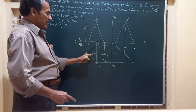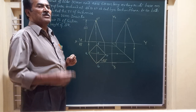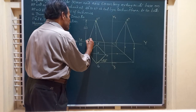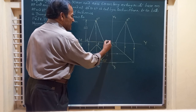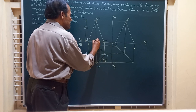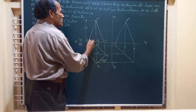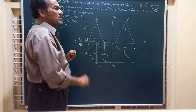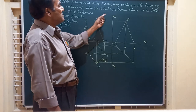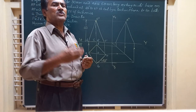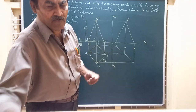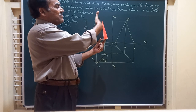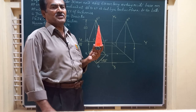In the top view, OA, OB, OC, and OD represent four slant edges. In the front view, the slant edges are O'A', O'C', O'B', and O'D'. O'O1' is the axis that is perpendicular to HP. This solid is being cut by a section plane perpendicular to both HP and VP.